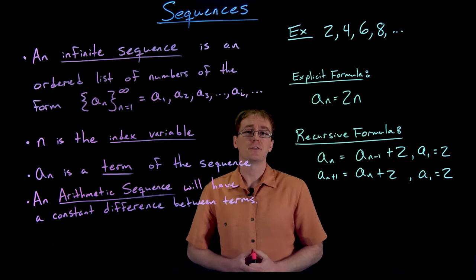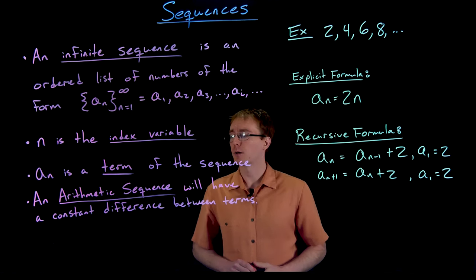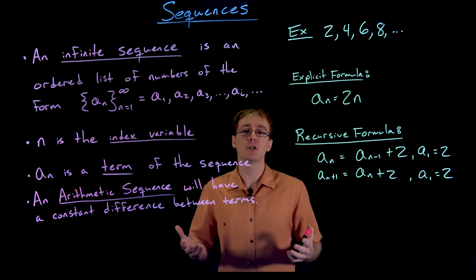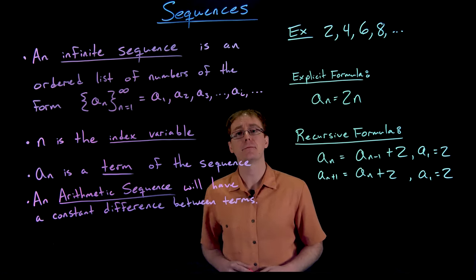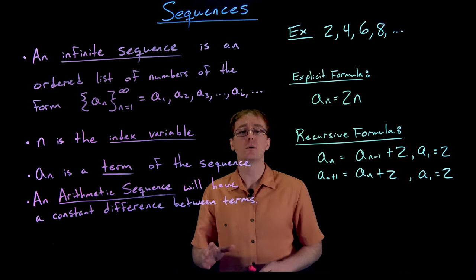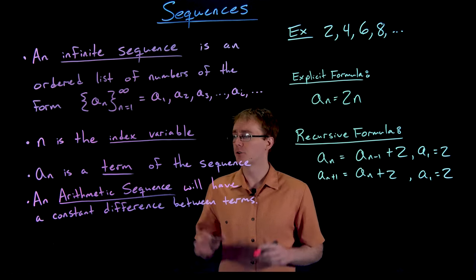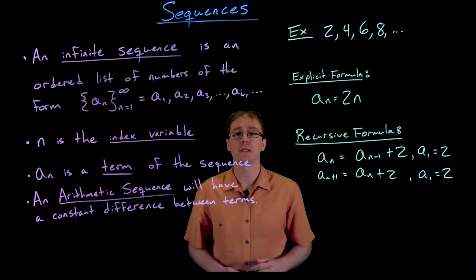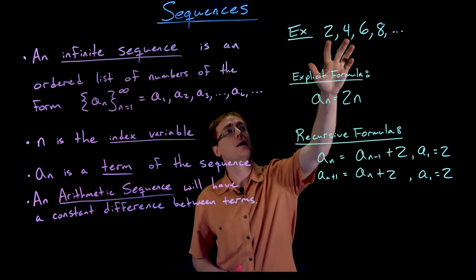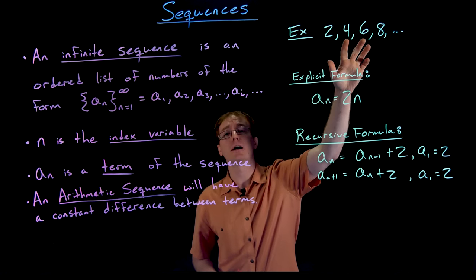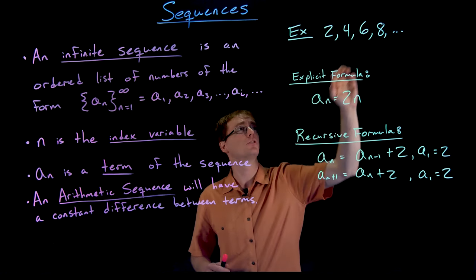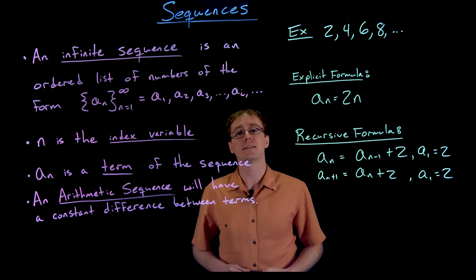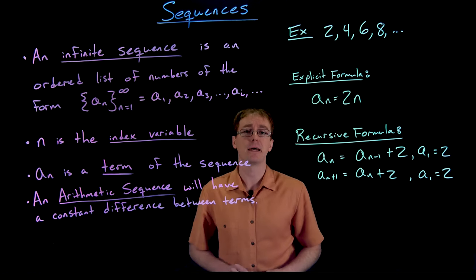An arithmetic sequence is a special type of sequence where if we subtract any two consecutive terms from each other, we get a constant difference. So an arithmetic sequence has a constant difference between terms. For our sequence: four minus two is two, six minus four is two, eight minus six is two. That constant difference of two is what makes this an arithmetic sequence.